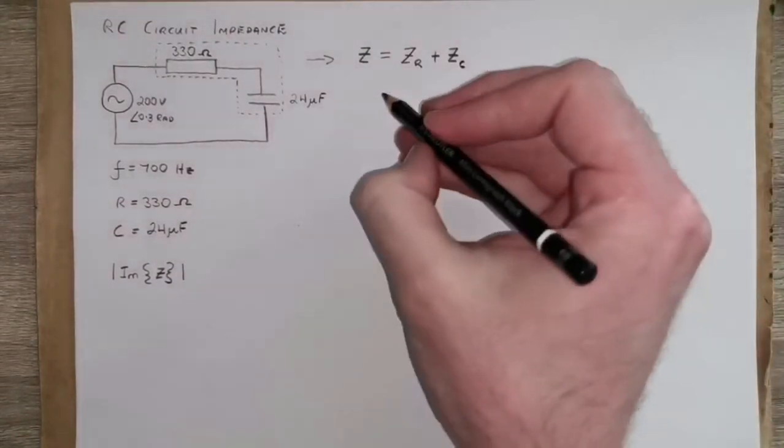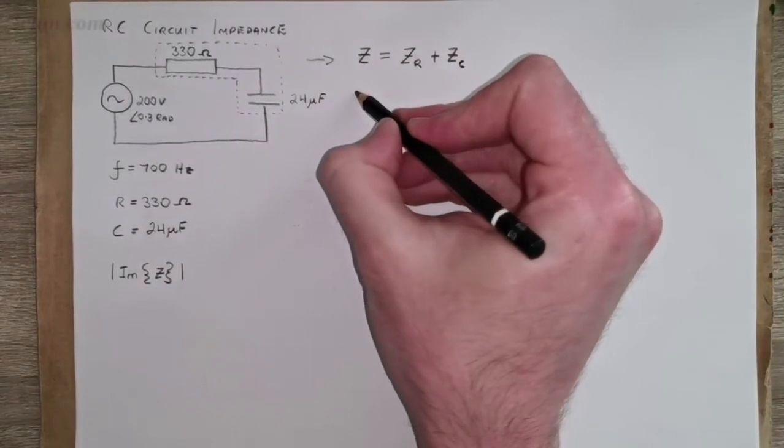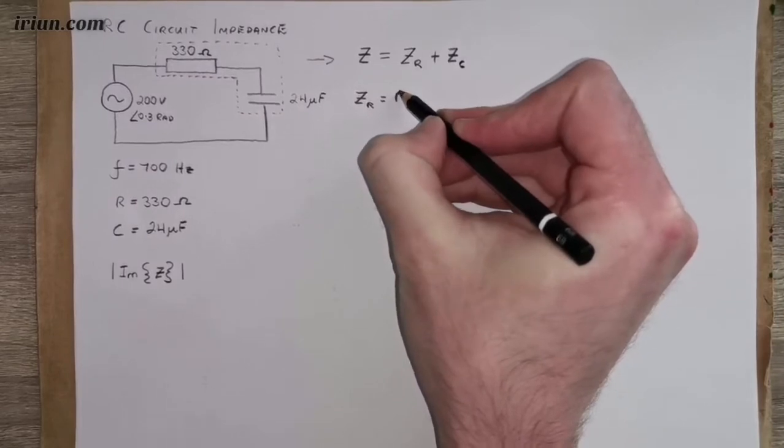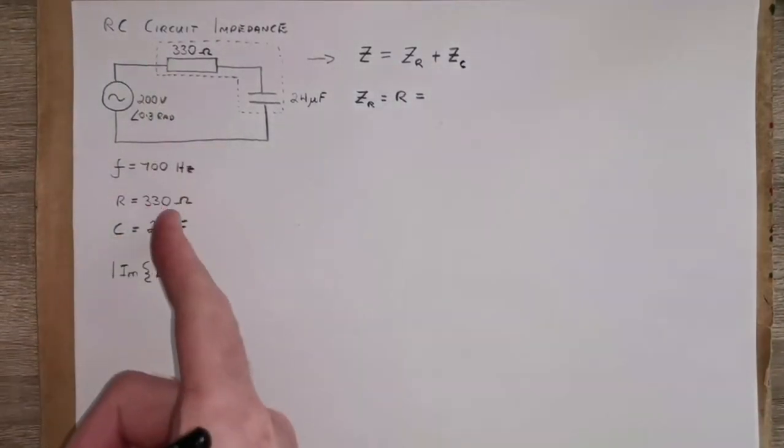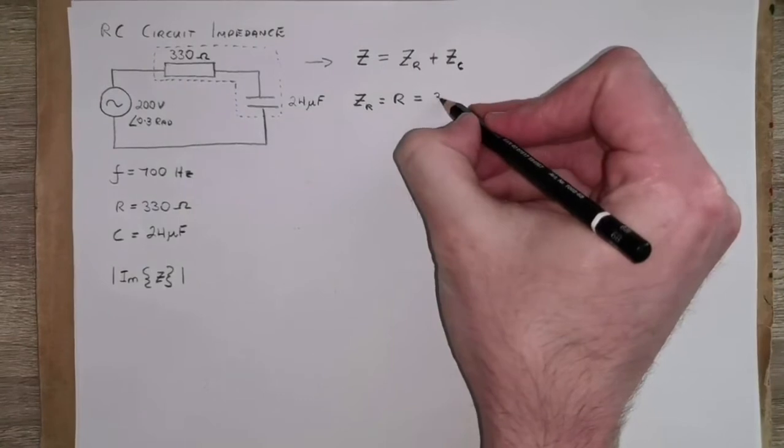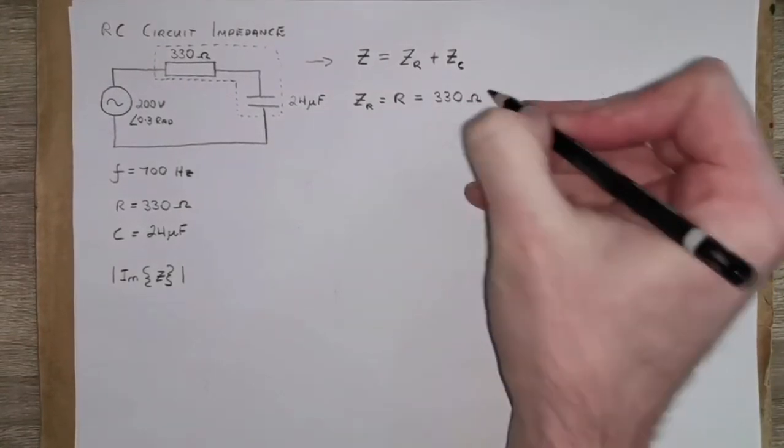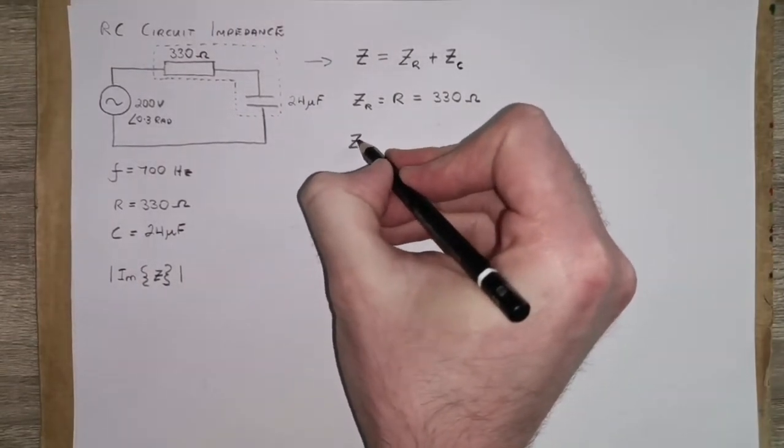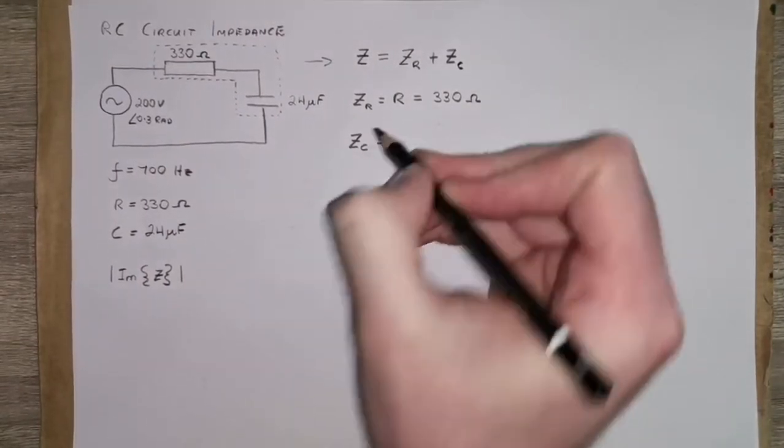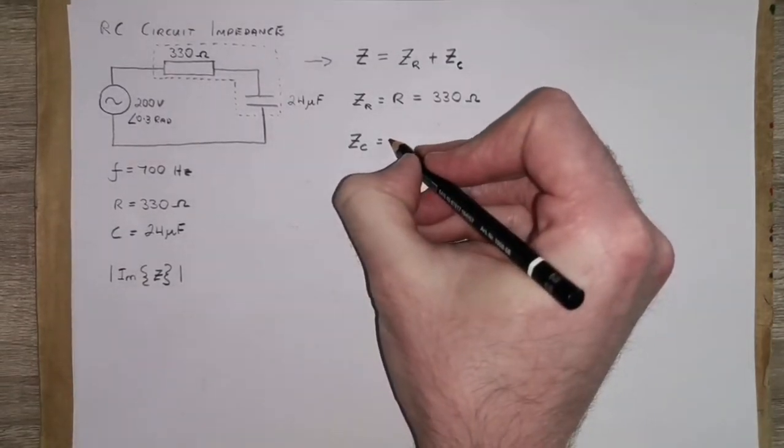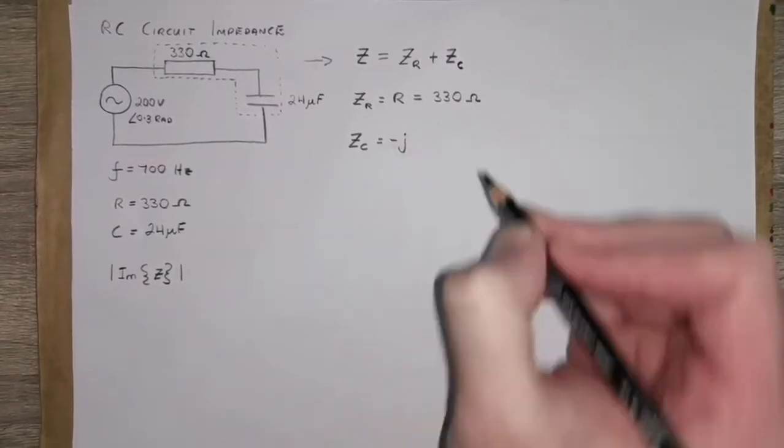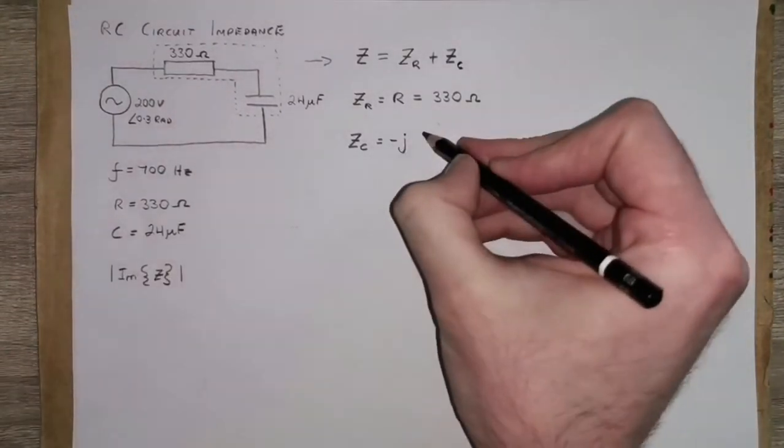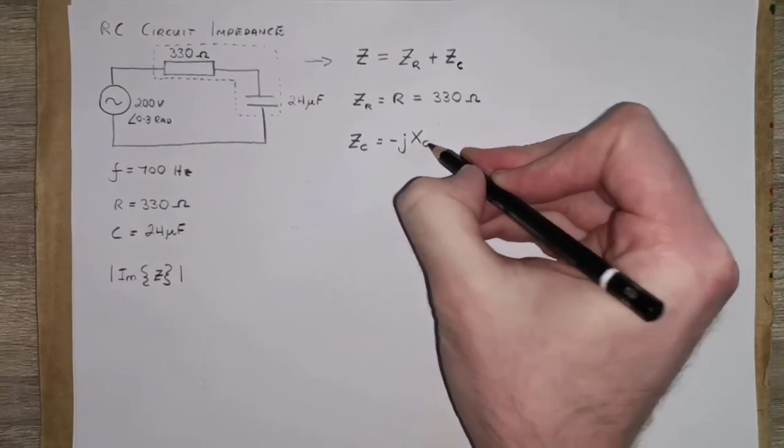And what you're also going to see here is that the impedance of the resistor is just its resistance. And we already have that value here, so it's 330 ohms. But the impedance of our capacitor is a little bit more complicated, but it's an imaginary value, so it has a J associated with it, and it's a negative imaginary value, and it depends upon its capacitive reactance Xc.